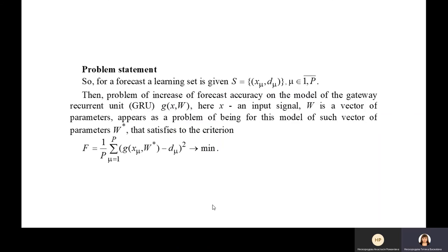Problem statement: For a forecast learning set S is given. Then problem of increase of forecast accuracy on the model of the gateway recurrent unit appears as a problem of finding for this model such vector of parameter W that satisfies the criteria.